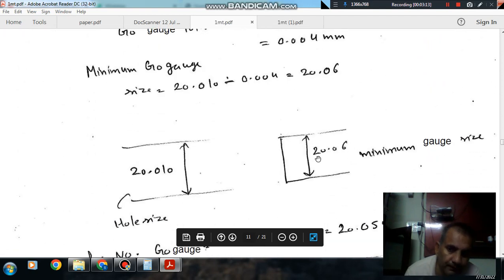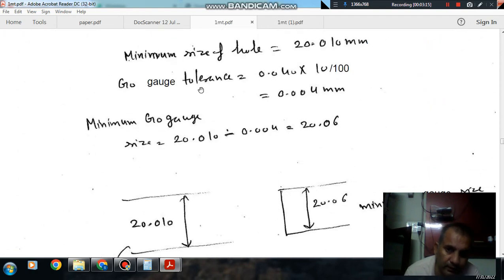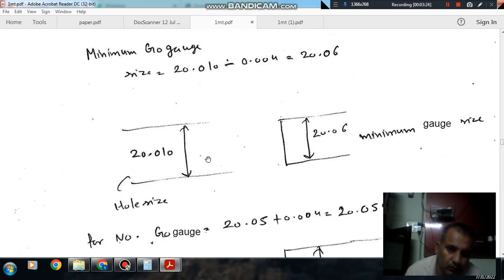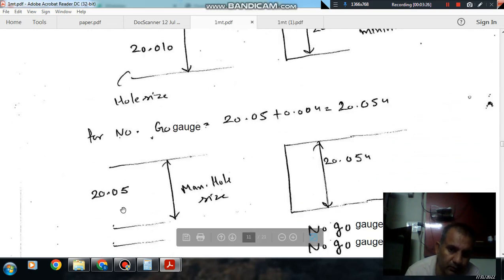And the gauge tolerance is 10% of this, so we can say it is 0.004. So maximum size is 20.05.